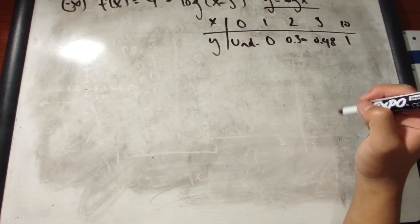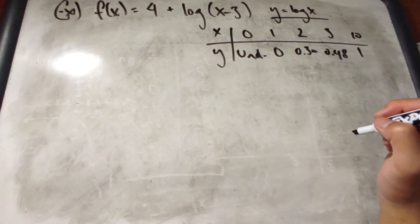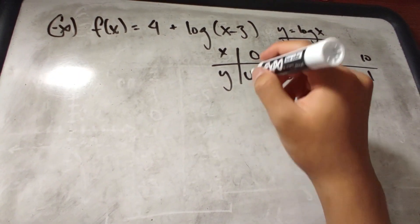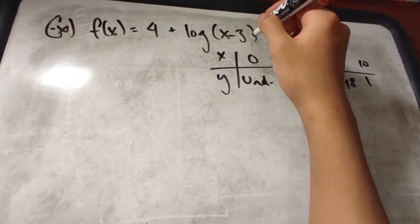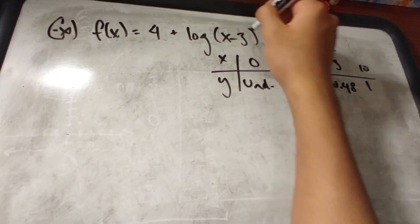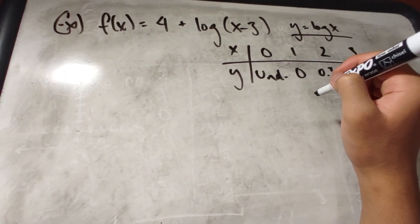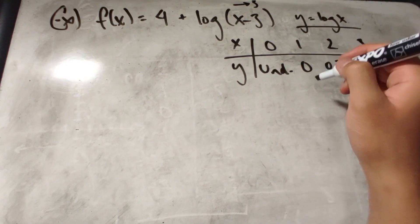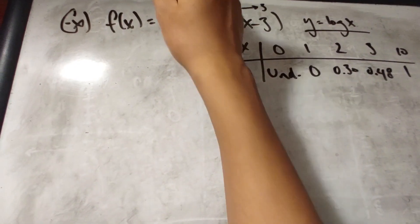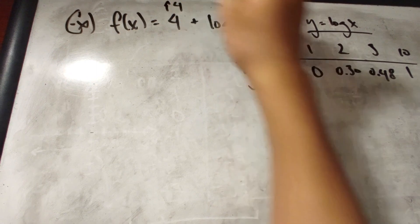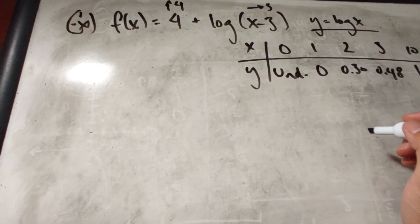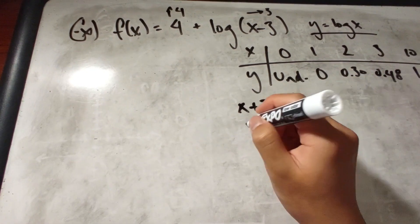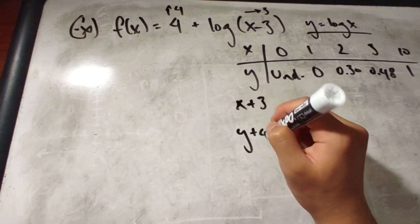And now we could apply the transformations onto a new table. So, in this case, because this part is x minus 3, in transformations, that shifts the graph right to 3. And if it's plus 4, it shifts the graph up 4. So, what this does to the actual values in the graph is that x increases by 3, and y increases by 4.